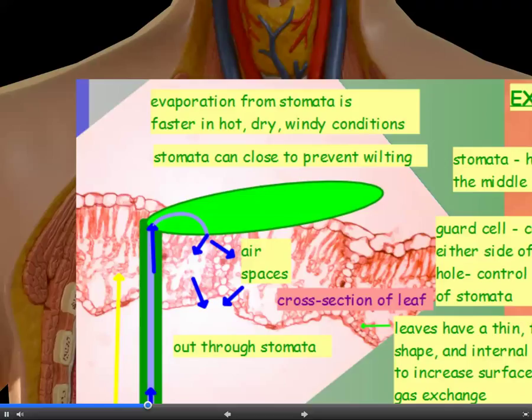Now the leaf itself is well adapted as a gas exchange surface because it's got a thin, flattened shape that provides a large surface area and it's got internal air spaces which also provide a large surface area.